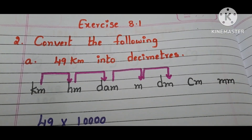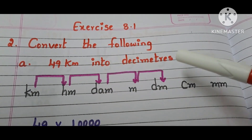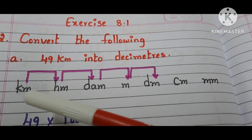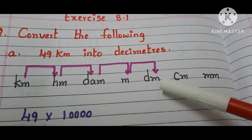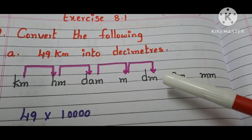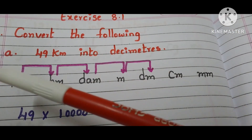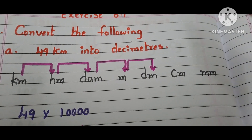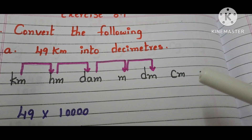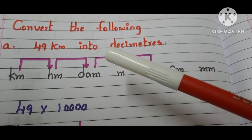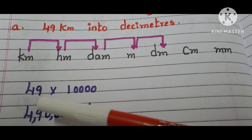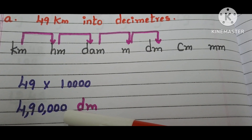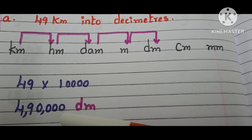The question is: convert the following. Part (a) is 49 kilometers into decimeters. The question is given in kilometers and we have to convert them into decimeters. Where are kilometers in the table? Here it is. Where are decimeters? Here it is. We have to move from left side to right side in the table — 4 steps. When moving left to right we multiply, so we multiply by 10,000. 49 times 10,000 is 4,90,000. The answer is 4,90,000 decimeters.